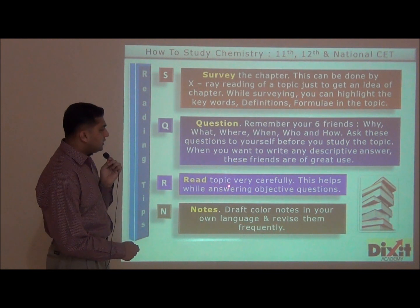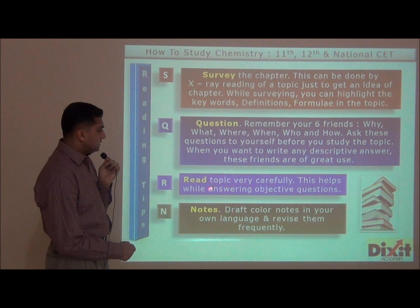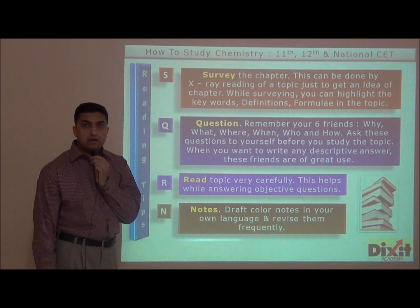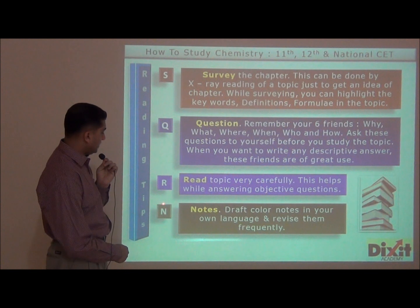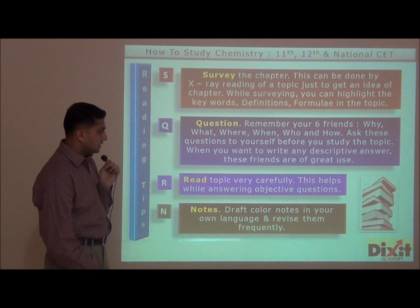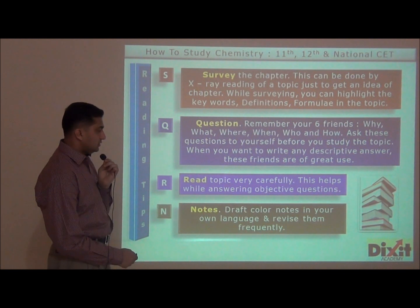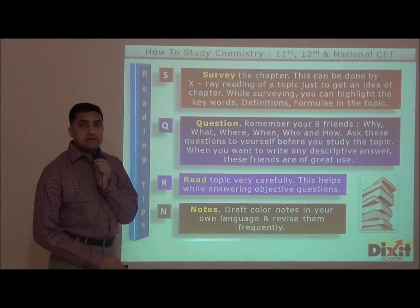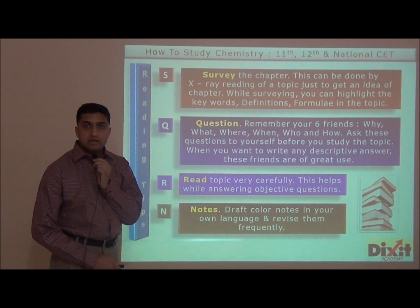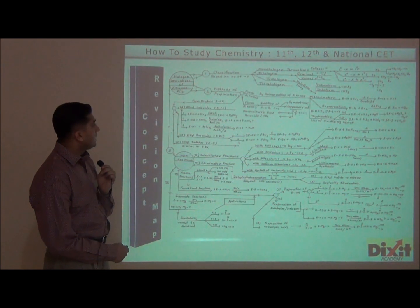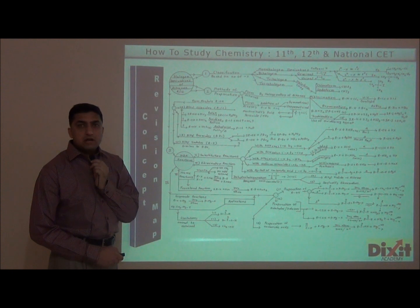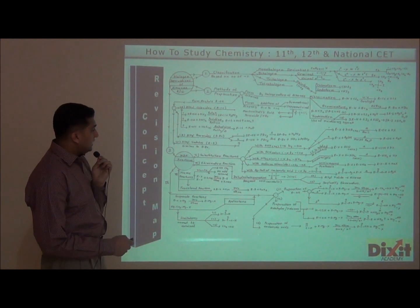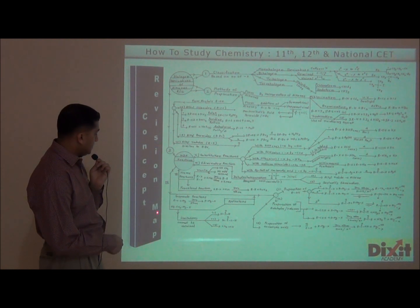R — read the topic very carefully. This helps while answering objective questions. Do not put any part up for the option. N stands for Notes. After reading and understanding the chapter, draft column notes in your own language and revise them frequently for memorization. Once reading and understanding of the topic is done, draw a concept revision map.